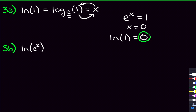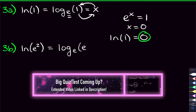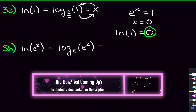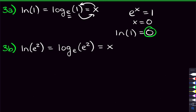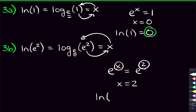What about natural log of e²? We replace ln with log base e, keep the e², set it equal to x, and make the e bigger. Put x over as the power on e, and e² goes on the right. You can see that x equals 2, which means the natural log of e² is equal to 2.